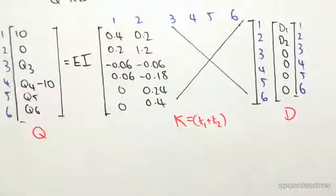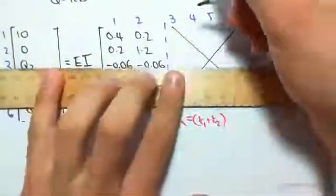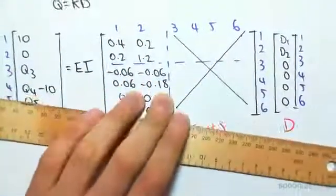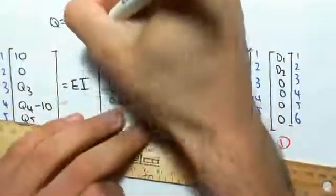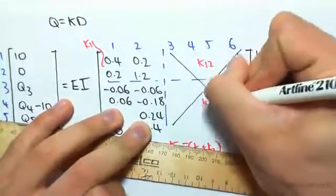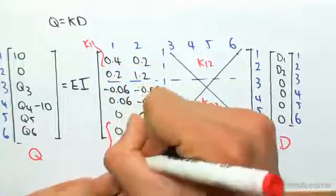Just to quickly partition this, if we were to come down this way and this way, this would be our K11 matrix, this would be our K12, K22, and this would be K21.